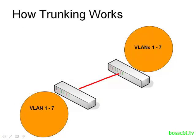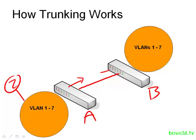Let's say this is switch A and this is switch B, and we have a user in VLAN 2 who sources a frame and it's determined that the destination is on switch B. When switch A sends that frame over the trunk and it's received by switch B, how does switch B know which VLAN that frame belongs to? VLANs 1 through 7 can use that trunk, so it can belong to any one of those particular VLANs. How does switch B figure it out?